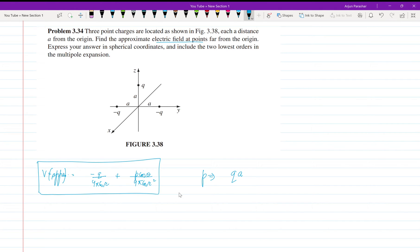What is P here? P is the dipole moment. We can see that the dipole moment is minus Q a minus j cap plus minus Q a j cap plus Q a z cap plus Q a z cap plus Q a x cap. This gives us minus Q upon 4 pi epsilon naught R plus 2 Q a cos theta upon 4 pi epsilon naught R squared. This is the approximate potential due to both the monopole and dipole terms.